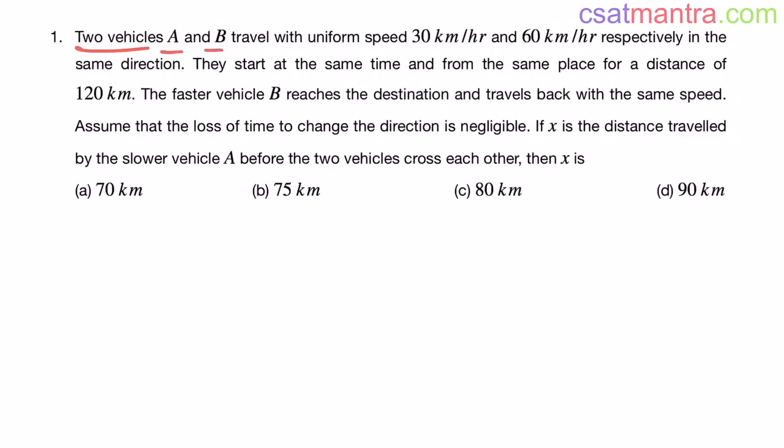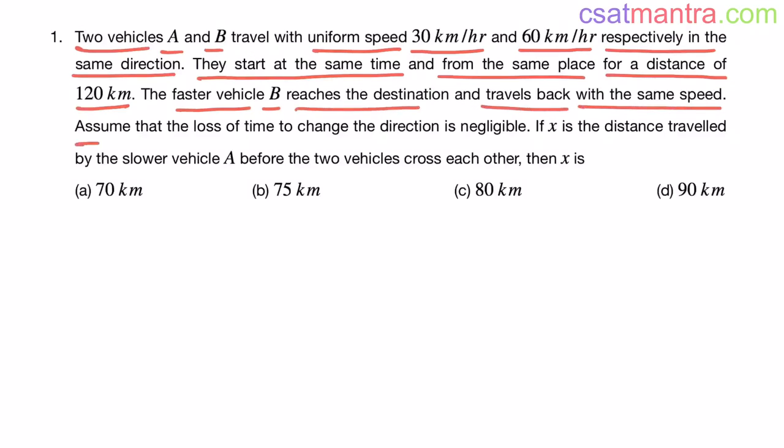Two vehicles A and B travel with uniform speed 30 kilometers per hour and 60 kilometers per hour respectively in the same direction. They start at the same time and from the same place for a distance of 120 kilometers. The faster vehicle B reaches the destination and travels back with the same speed. Assume that the loss of time to change the direction is negligible. If X is the distance traveled by the slower vehicle A before the two vehicles cross each other, then X is.